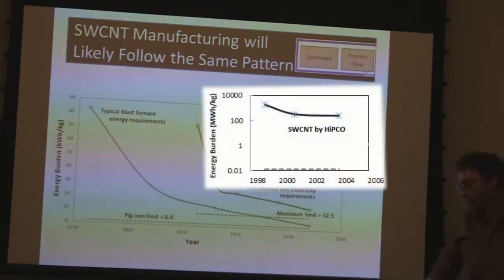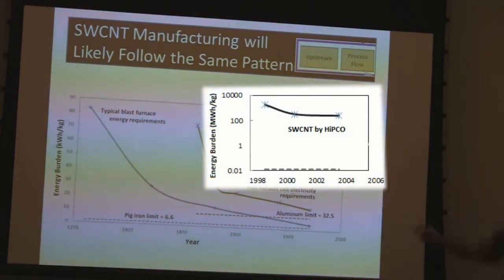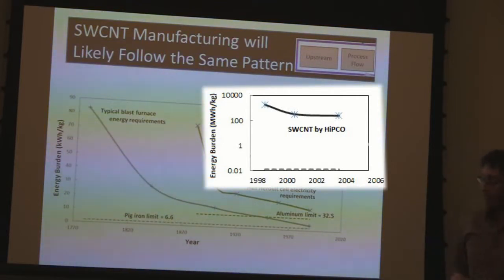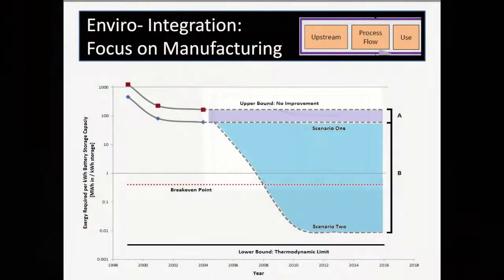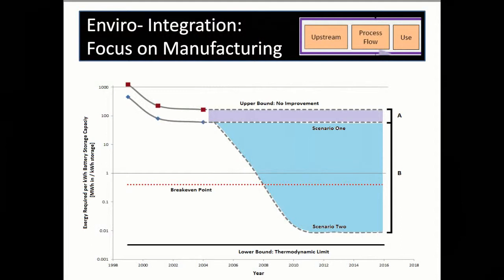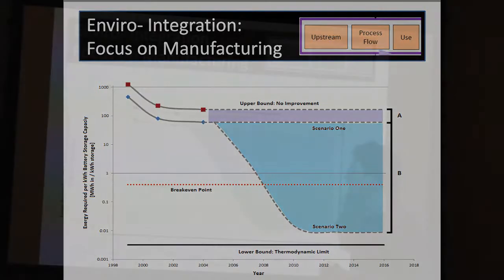Similarly, pig iron and aluminum production by the Hall-Héroult process show decreases over the last 100–200 years, crashing towards their thermodynamic minimum. Early data for the HIPCO process already shows almost two orders of magnitude decrease. The question is: to what extent will single-wall carbon nanotubes follow this same pattern, especially given that their thermodynamic minimum is much lower than current values? Building on this analogy of experience curves, we developed two scenarios of improvement for single-wall carbon nanotube manufacturing and use in lithium-ion anodes.